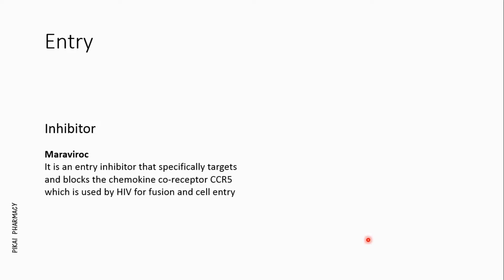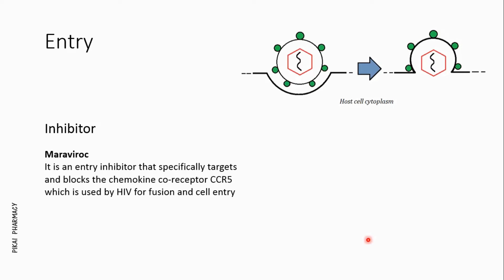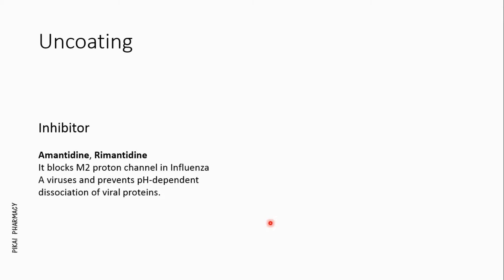After attachment, the virus enters the host cell cytoplasm. This viral entry across the host cell membrane is mediated by other viral proteins. Antiviral drugs also inhibit this process to prevent viral infection. A common example is maraviroc, which is an entry inhibitor that specifically targets and blocks the chemokine co-receptor CCR5, which is used by HIV for fusion and cell entry.